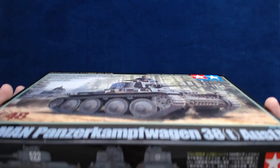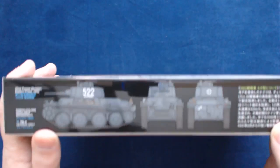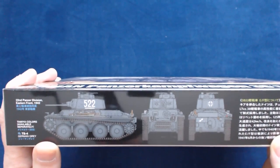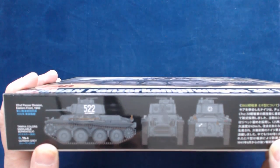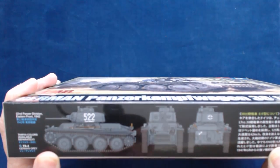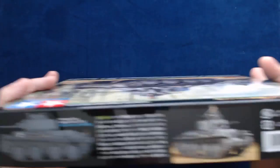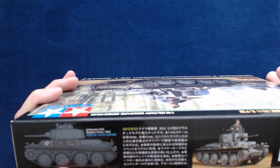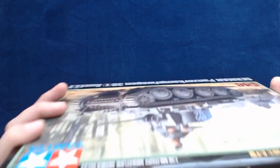So let's go ahead and take a look at the sides here. We've got some markings for a 22nd Panzer Division Eastern Front 1942, and then on the other side, that Eastern Front 1942 is still unknown unit.